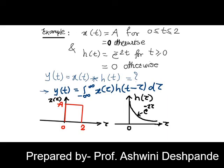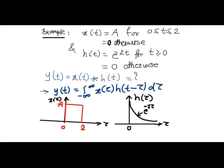Let us perform convolution between the given two continuous time signals. x(t) is A for 0 to 2 and is 0 otherwise, which implies it is a rectangular function. h(t) is given as an exponential function for the interval t greater than or equal to 0 and is 0 otherwise.